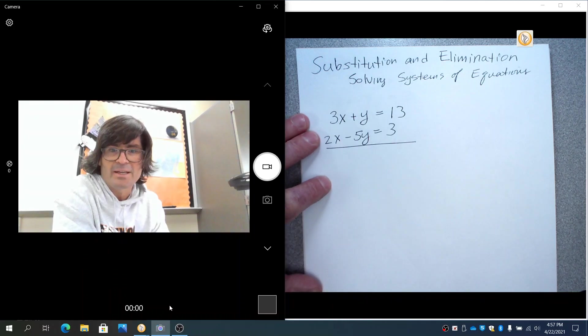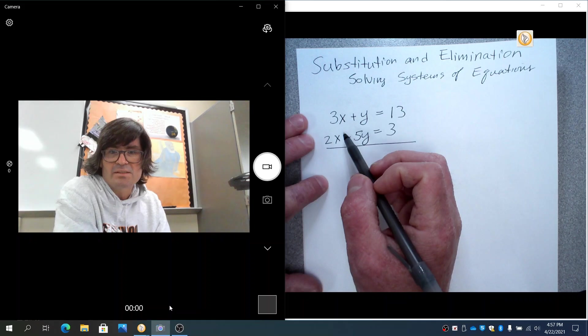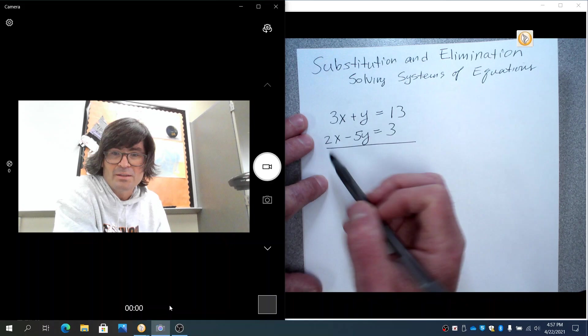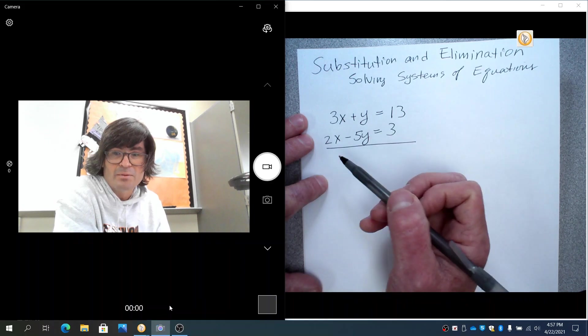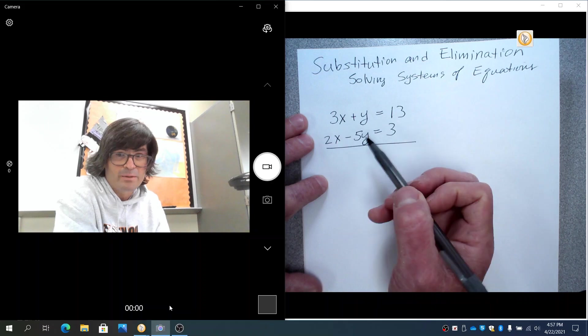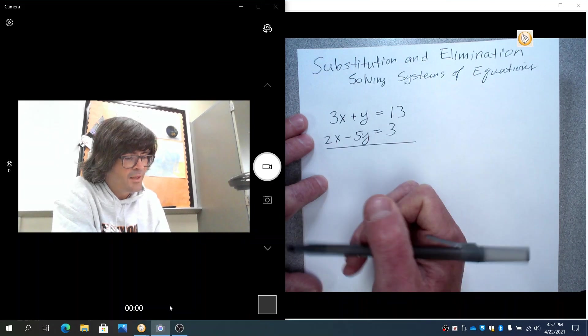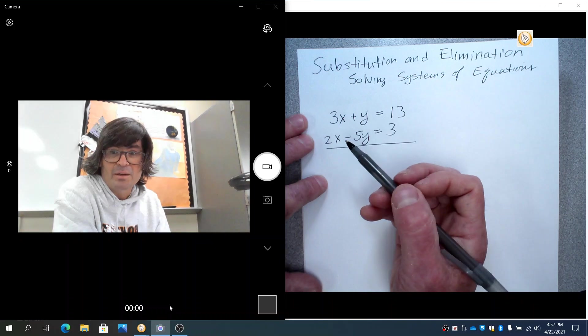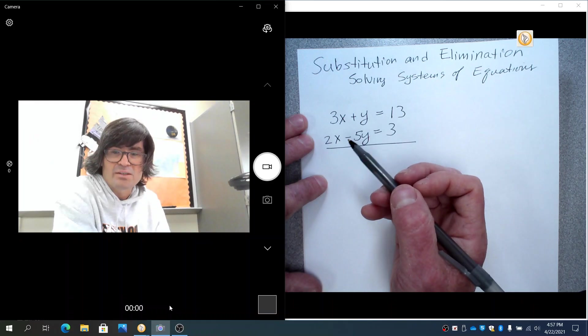First, we're going to do elimination. The goal with either of these is to find an x and a y that makes both of these equations true. Typically, you need as many variables as you have equations for this to work. Two equations with two variables, three equations with three variables. So with elimination, the goal is to get one of the variables to go away when you add these two together.